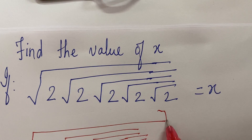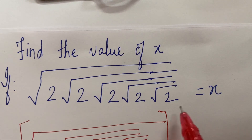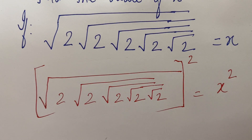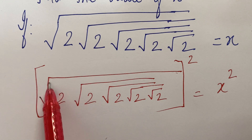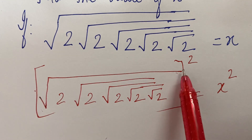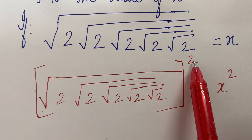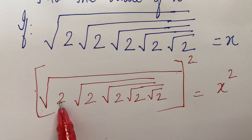You are squaring both the sides. So when you square, the root sign — this means 1 upon 2. 1 upon 2 into 2, that will give you 2.